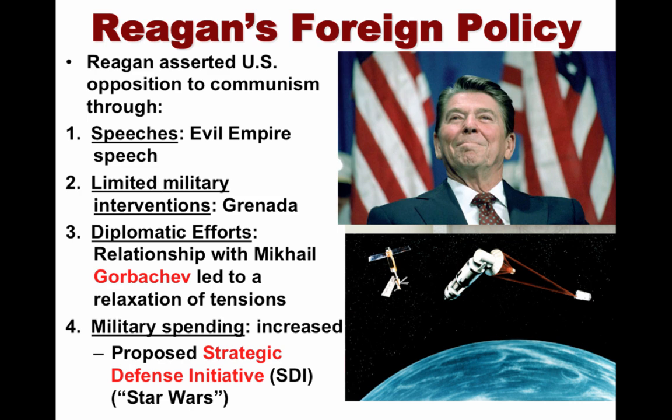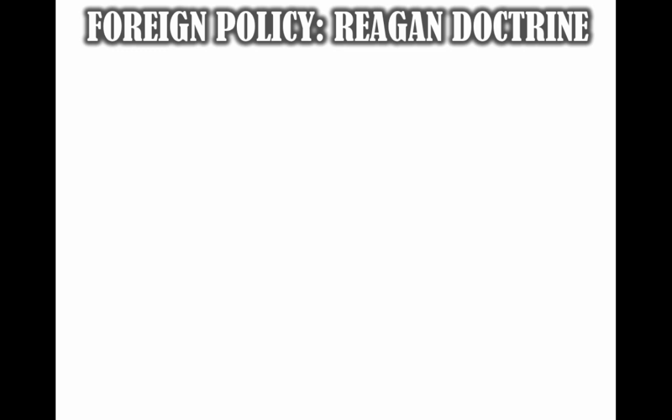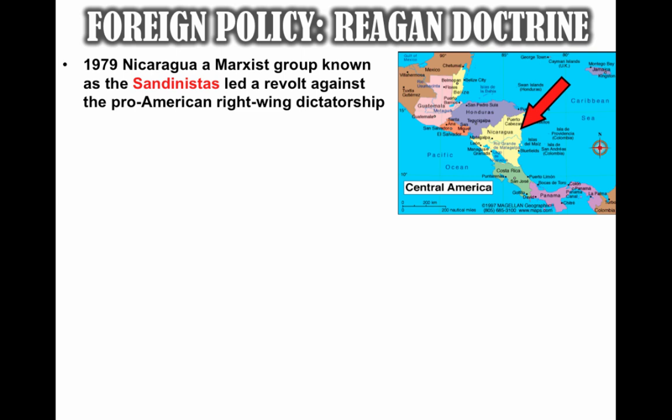Important to understand is the Reagan Doctrine: Reagan and the U.S. would support opponents of communism anywhere and everywhere, not necessarily just Soviet-supported communism. An example of this commitment can be seen in 1979 in Nicaragua, where a Marxist group known as the Sandinistas led a revolt against the pro-American right-wing dictatorship and overthrew them. This led Reagan to increase U.S. involvement in the so-called third world, pursuing an interventionist foreign policy and supporting the right-wing dictatorship since they were anti-communist.